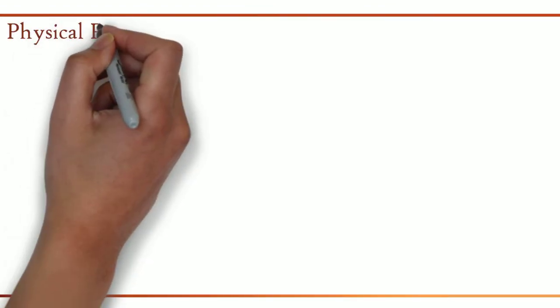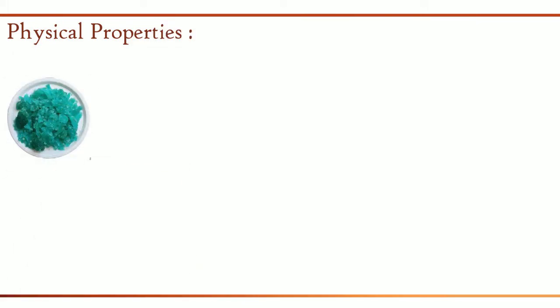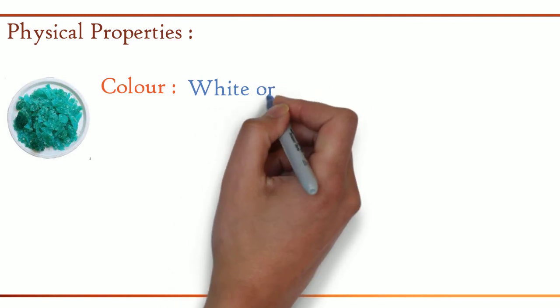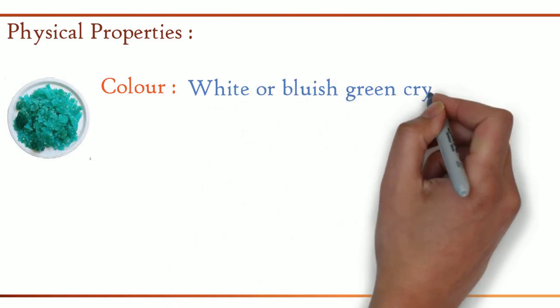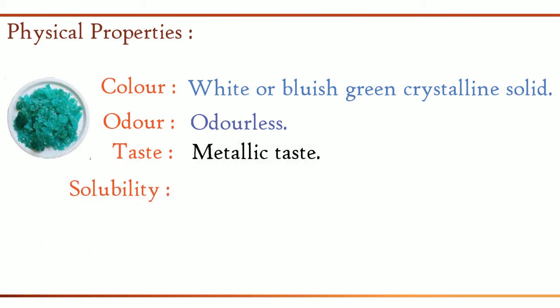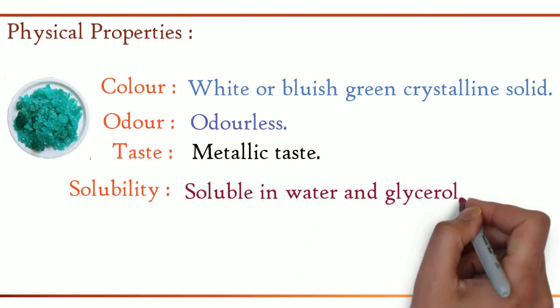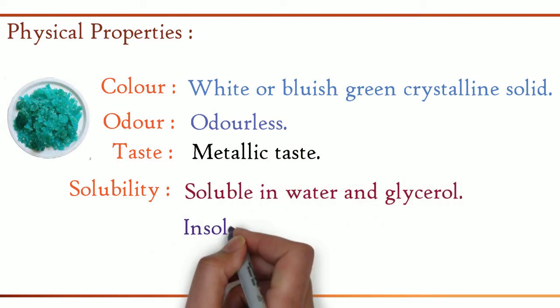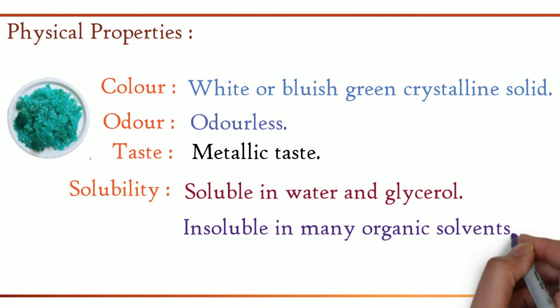Moving on to the physical properties. Color: white or bluish green crystalline solid. Odor: ferrous sulfate is odorless. Taste: metallic taste. Solubility: soluble in water and glycerol, insoluble in many organic solvents.